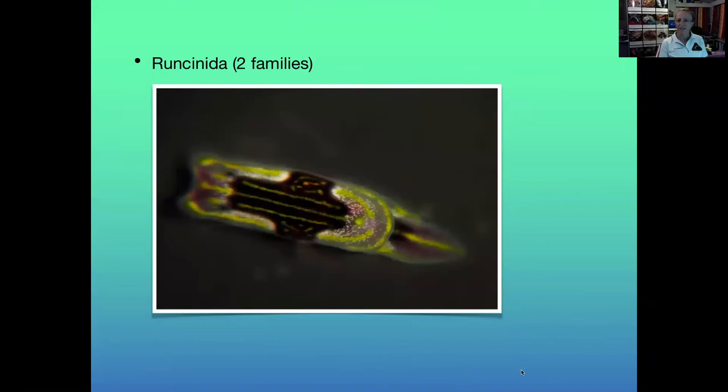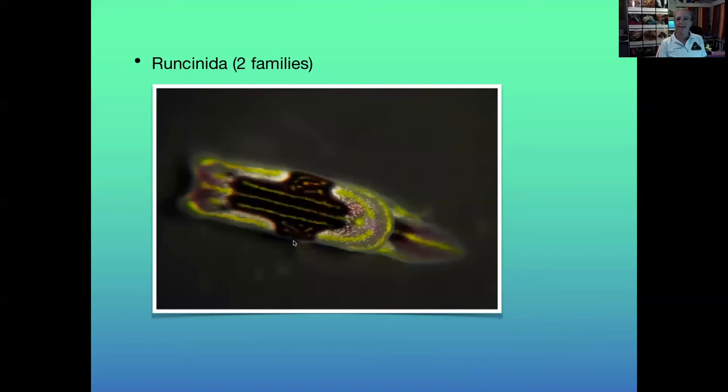The Runcinida look similar to Cephalaspidea — the head shield slugs — but have a different line of ancestors. They tend to be small and flat; this photo was taken on a microscope and the specimen was only about two or three millimetres long. This particular one is from Ilby and is known more widely from further south around Victoria. We're lucky here because we're on the transition zone between tropical and temperate waters, so we get a mix of slugs. This is not a very common species.